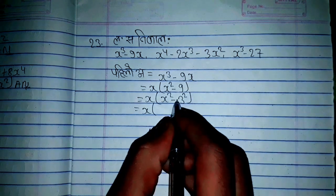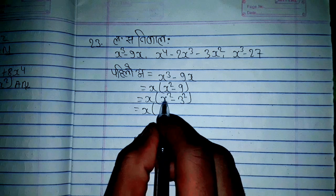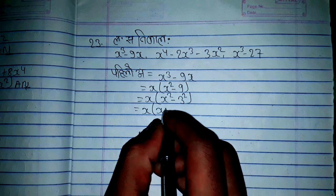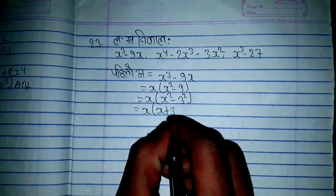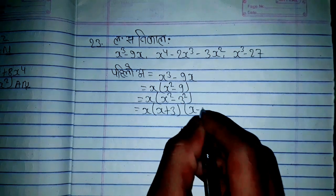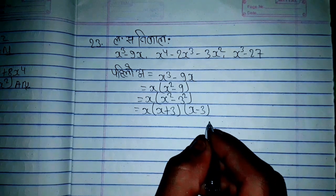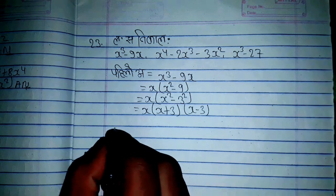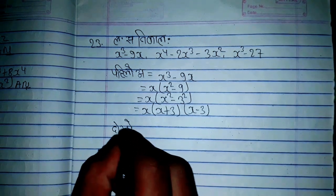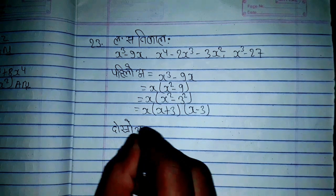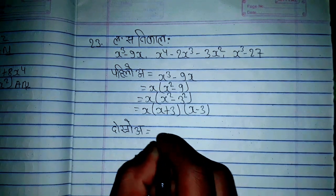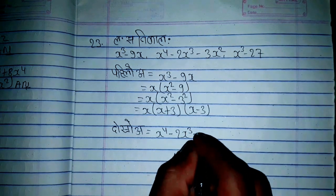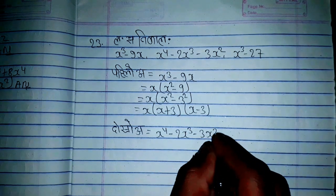x is equal to a² minus b². So x² minus 3² is equal to a² minus b², which gives us a plus b times a minus b, meaning x plus 3 times x minus 3. Then x equals a² minus 3², and minus 3x² equals a² minus 3x².